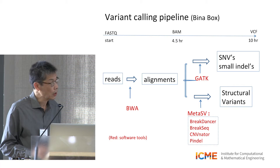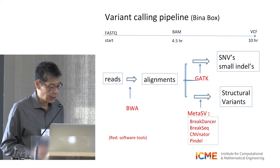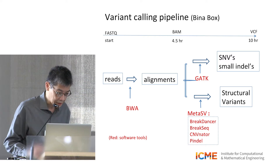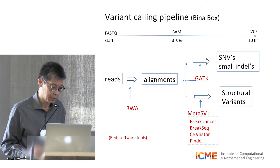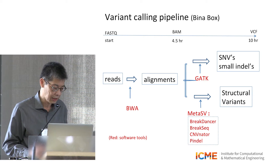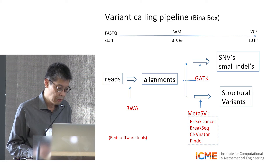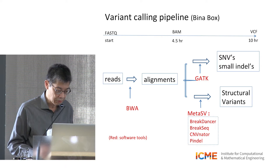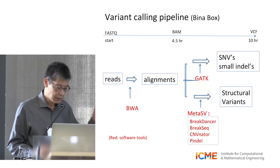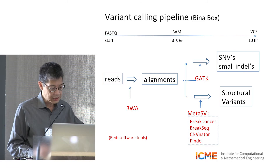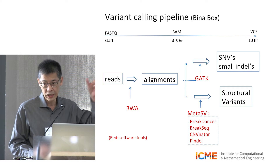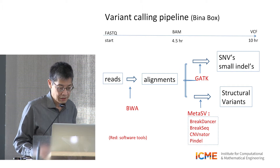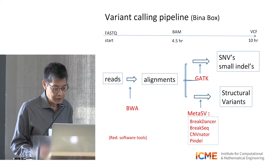Currently, if you analyze this data, you start from the FastQ file. With data like that, it takes about five hours or so to get the reads aligned to the 3 billion base pair reference sequence.